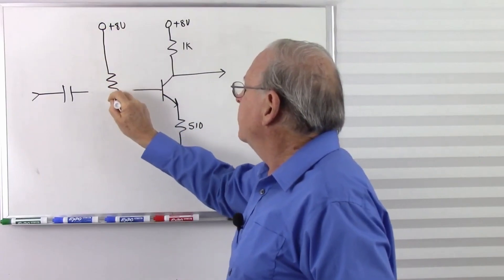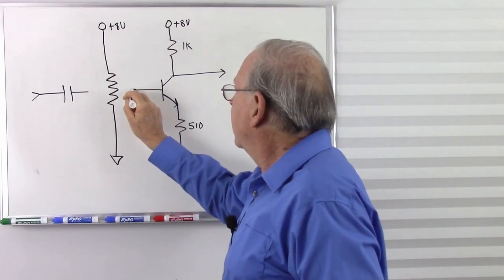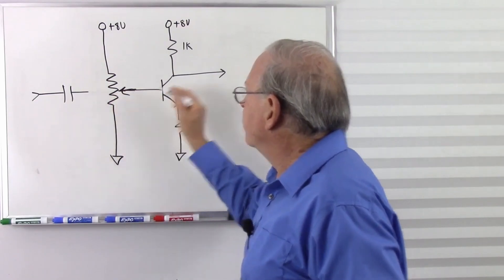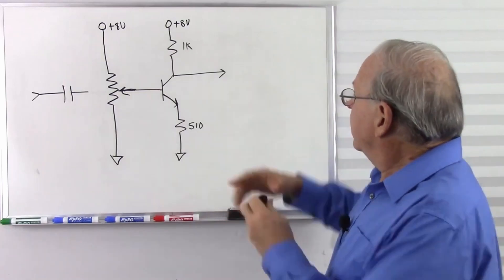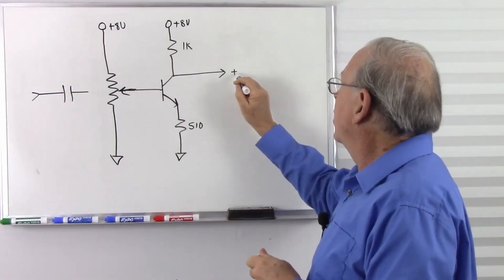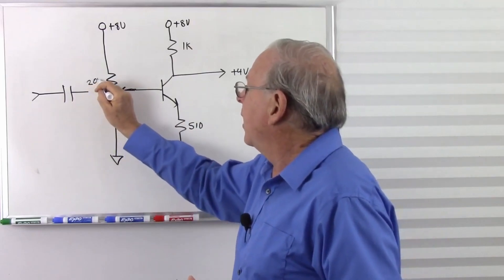Here's our potentiometer. And the wiper goes to the base of the transistor. Now what else did I need to know? I wanted this to be plus 4 volts. So here's my 20k pot. Once again, I just pulled out a 20k pot, said that looks like that will do.